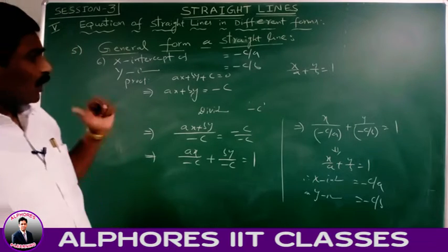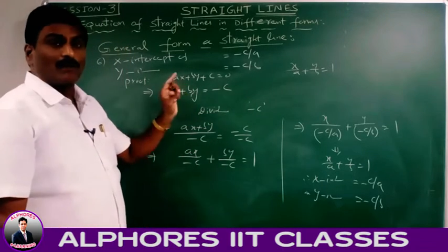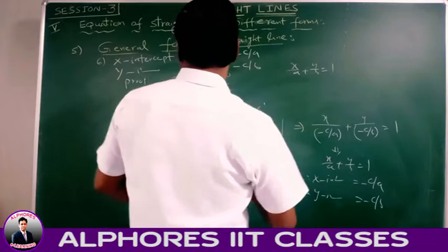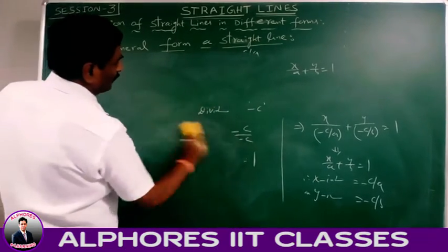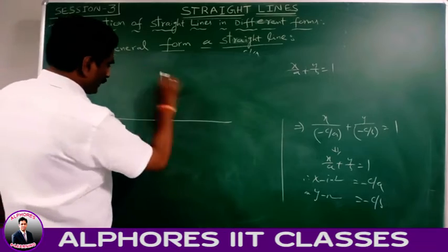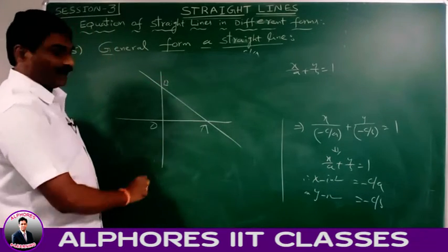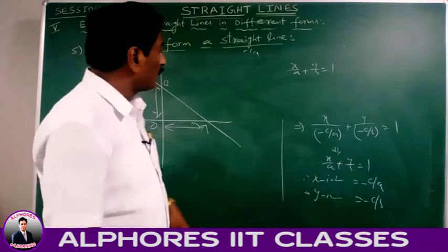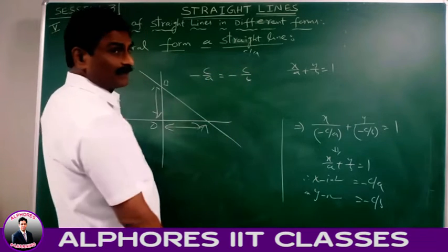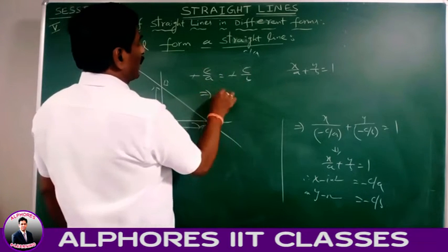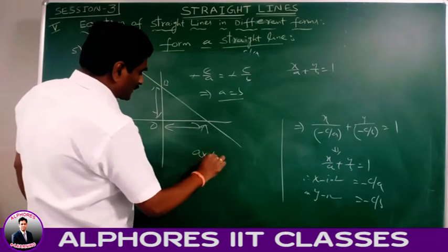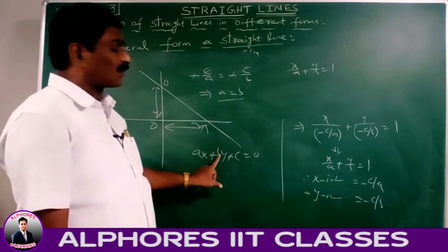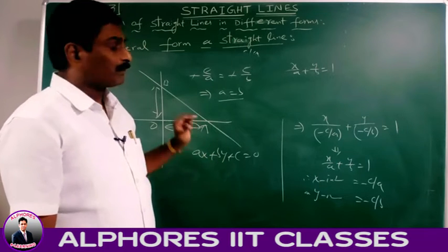Suppose the line ax + by + c = 0 makes equal intercepts on the coordinate axis. Equal intercepts means x-intercept equals y-intercept: -c/a = -c/b. The minus signs and c cancel, giving a = b. If the line cuts the coordinate axes at equal intercepts, then the x-coefficient equals the y-coefficient.